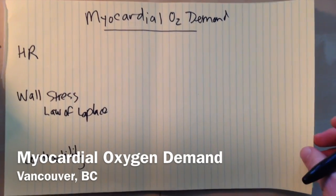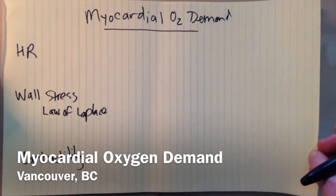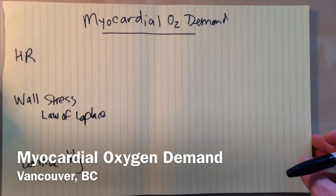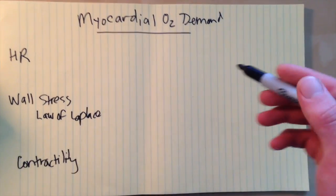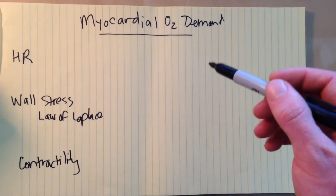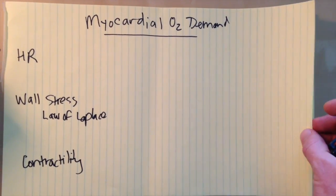Today I'd like to finish off the theme we were talking about in the last video about myocardial oxygen supply and go on the other side and talk about myocardial oxygen demand and the factors that go into figuring that out.